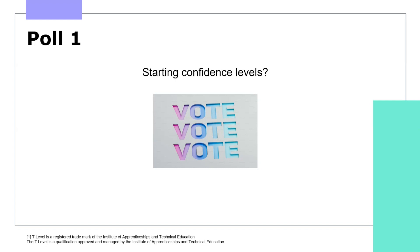We're going to start off with a starting poll, which I'm going to launch via Teams. We have large numbers today. We're asking for your starting confidence levels in terms of where you're at in assessing the early years structured observations. On a scale of one to ten, how confident do you feel in assessing the education and early years T-level structured observations, with one being low and ten being high? If you can see and access the poll, please click on it now. If you can't access the poll due to technical settings, please put your number in the chat.